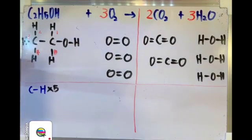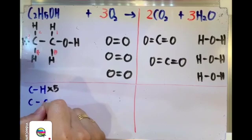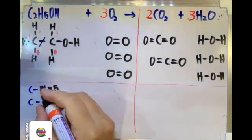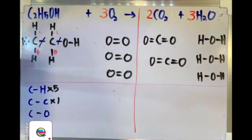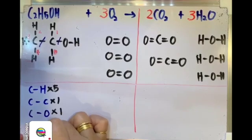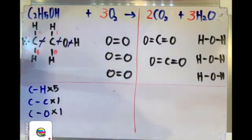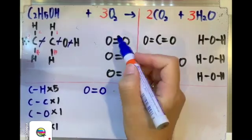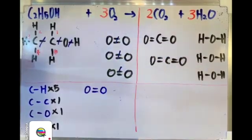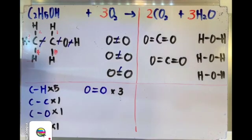Secondly, I can see a C single bond C — just 1. Then the next one, I can see C single bond O — also just 1. Next, I can see O single bond H, which is another 1. Then moving on to the oxygen double bond oxygen — there are 1, 2, 3 — so there are 3 O=O bonds. This gives us the total types of covalent bond energy found in our reactants.